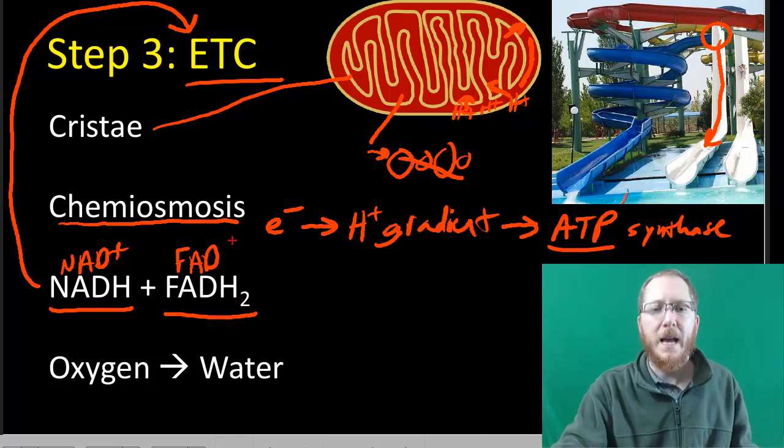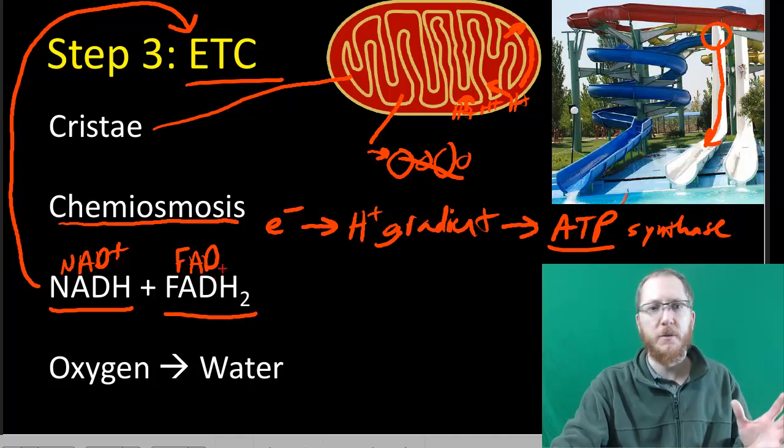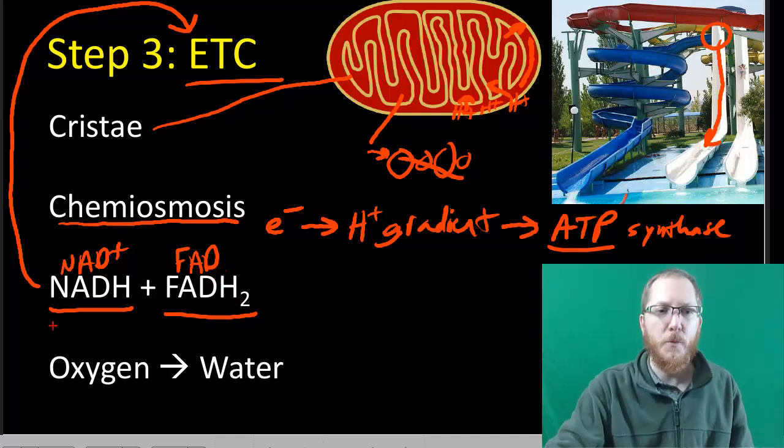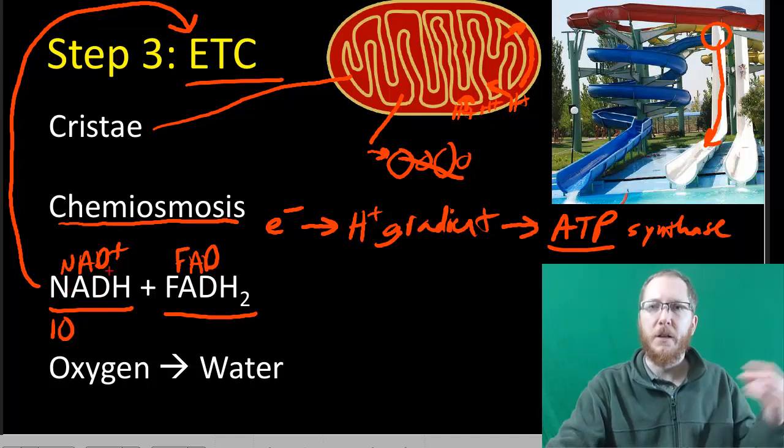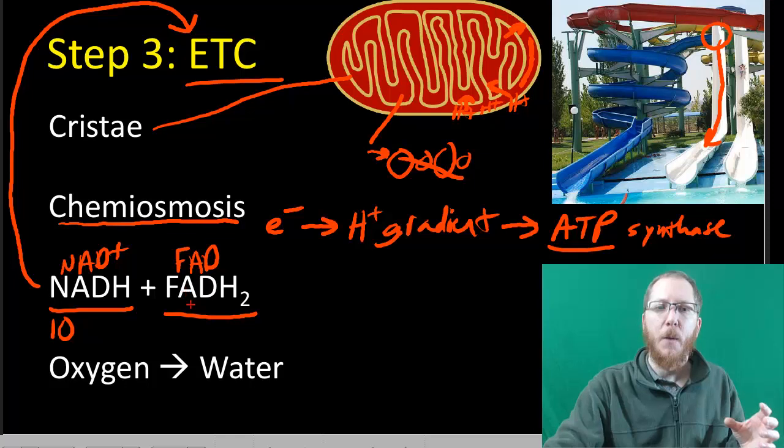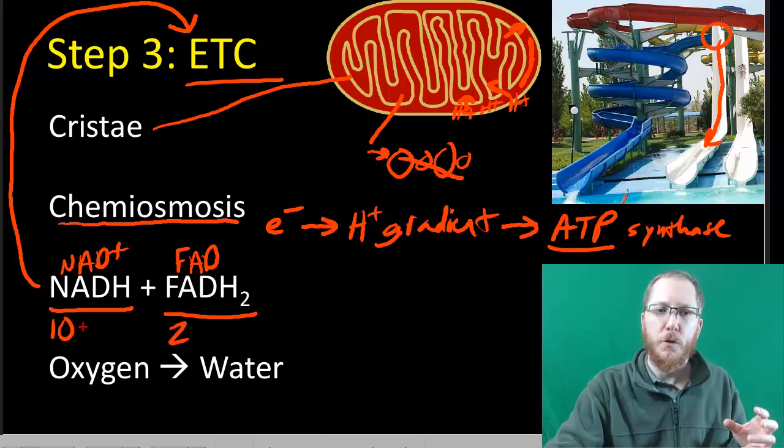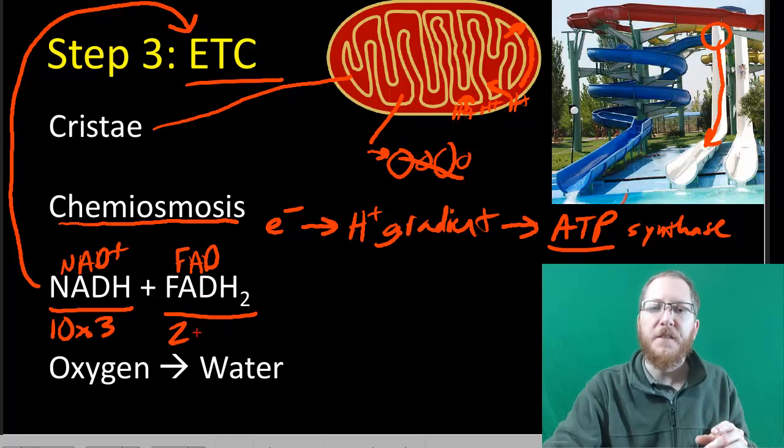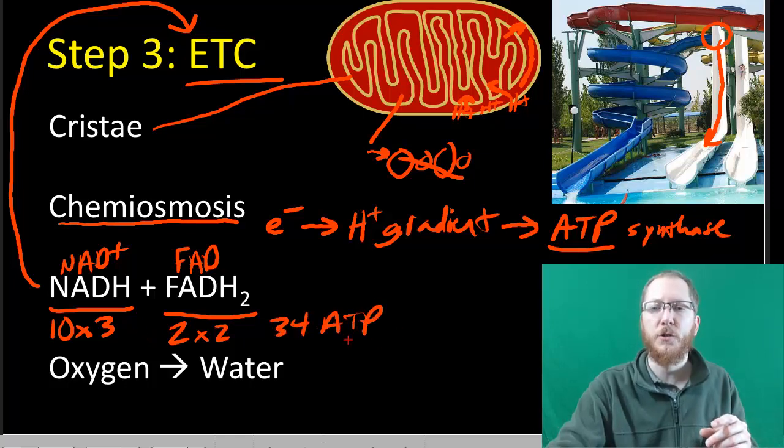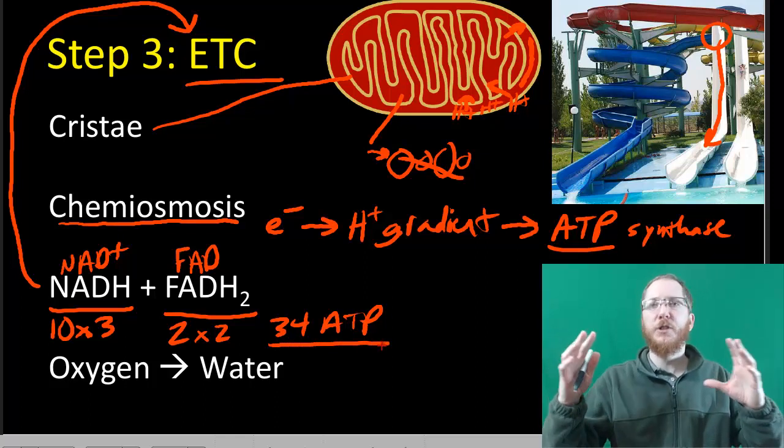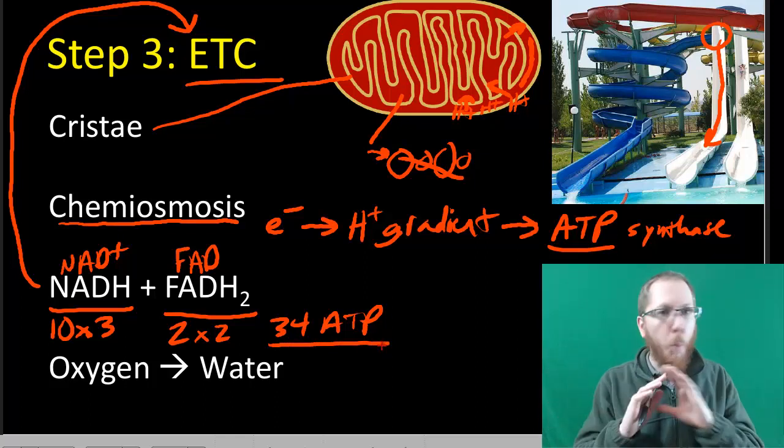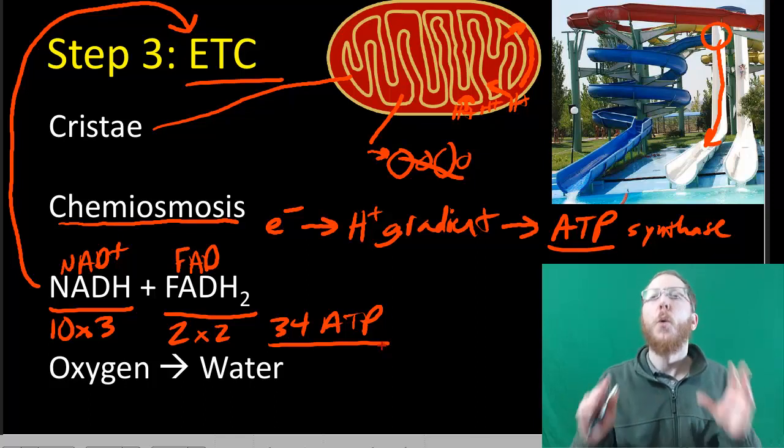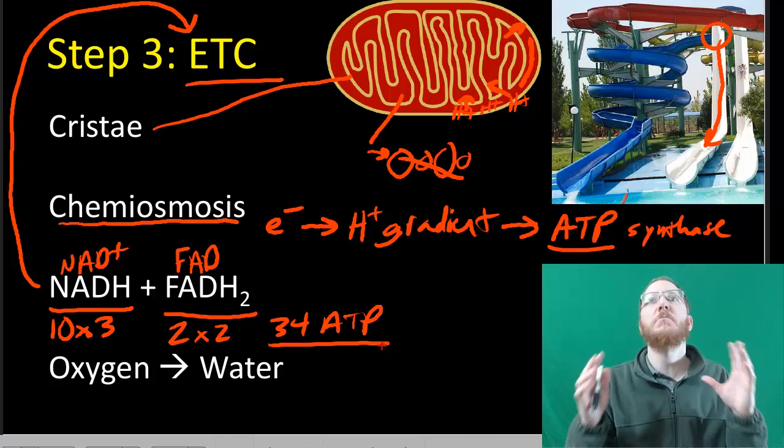We have ten NADHs that we produced during glycolysis, two, and Krebs, eight, and we had two FADH2s. Each NADH gives us enough for three ATP. Each FADH2 gives us enough for two. We have a total of 34 ATP that we make during the electron transport chain. The electron transport chain produces a ton of ATP, way more than glycolysis two, way more than Krebs two. This is where the vast majority comes from.